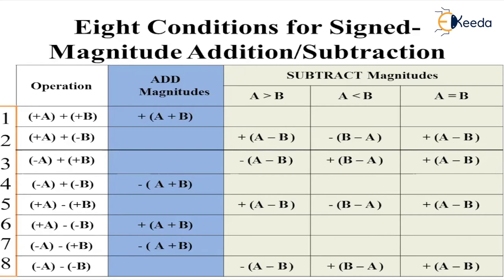The fourth condition is −A + (−B): here you are adding the magnitudes A plus B, and the outside sign is minus, so whatever result you get when you add two numbers, it will carry a negative sign. For the fifth condition, +A − (+B): if A is greater than B, perform A minus B and the output is positive. If A is less than B, perform B minus A and the output is negative. If A equals B, A minus B gives a positive result. For +A − (−B), you only add the magnitudes A plus B.